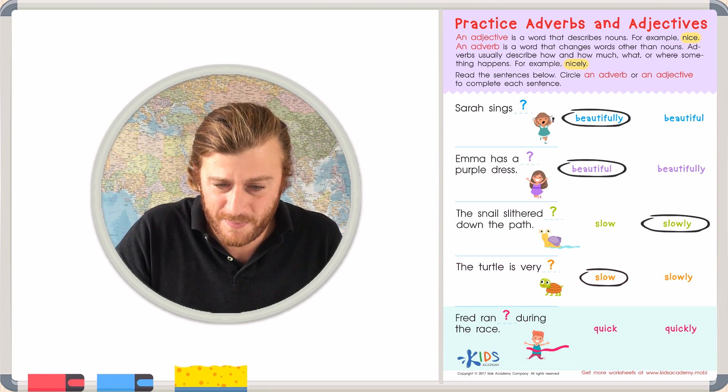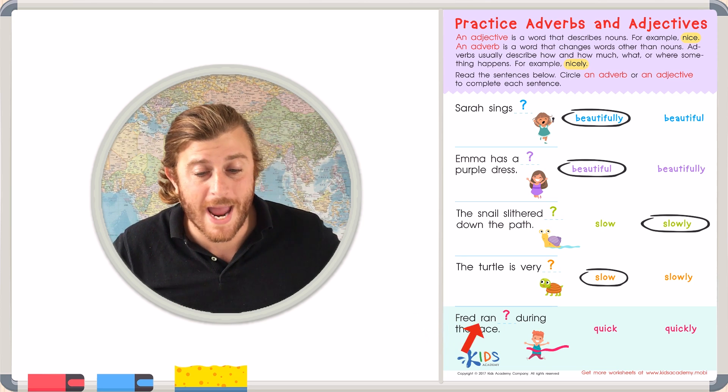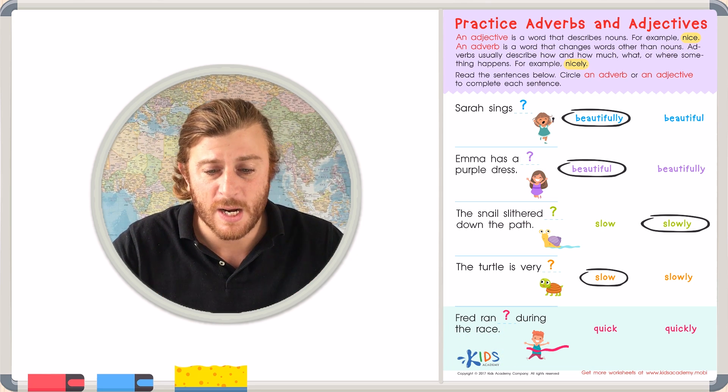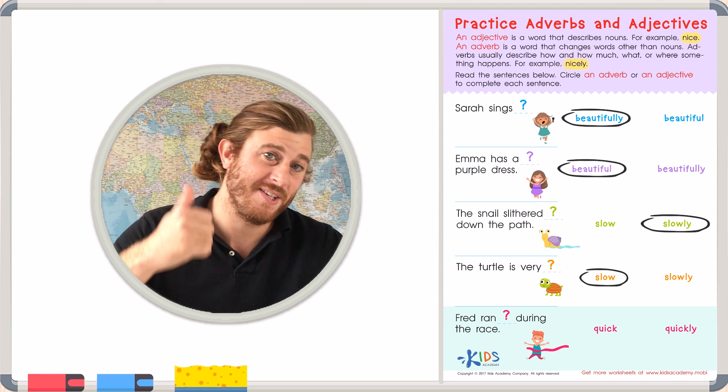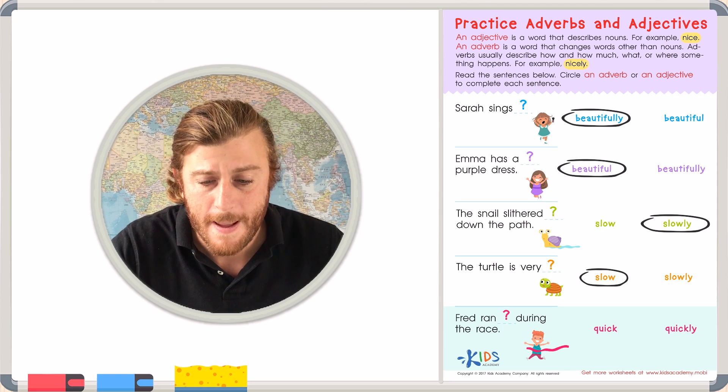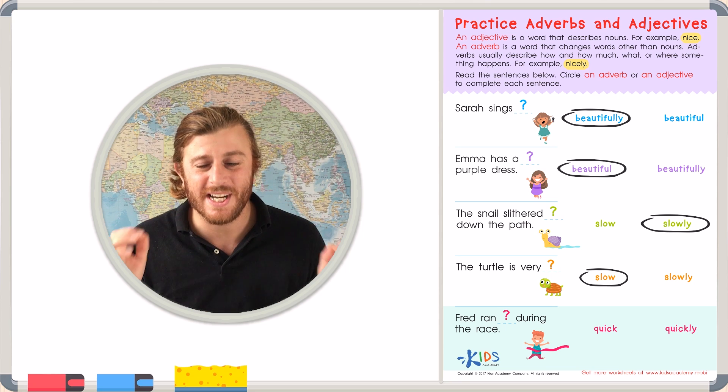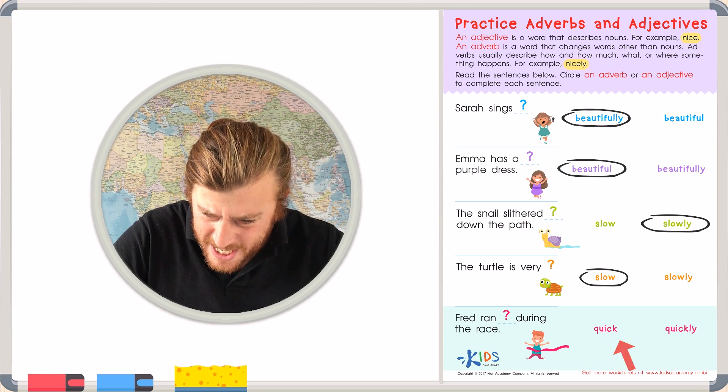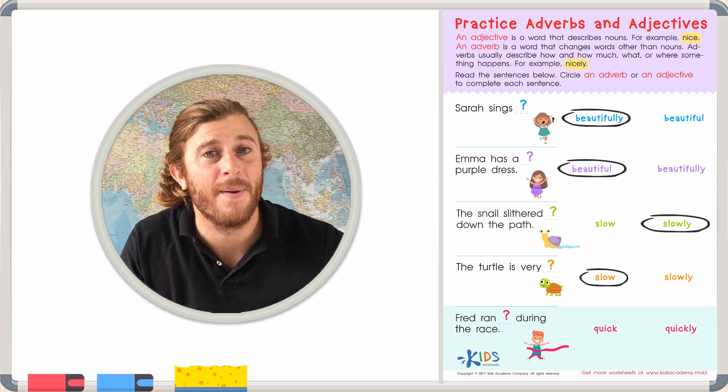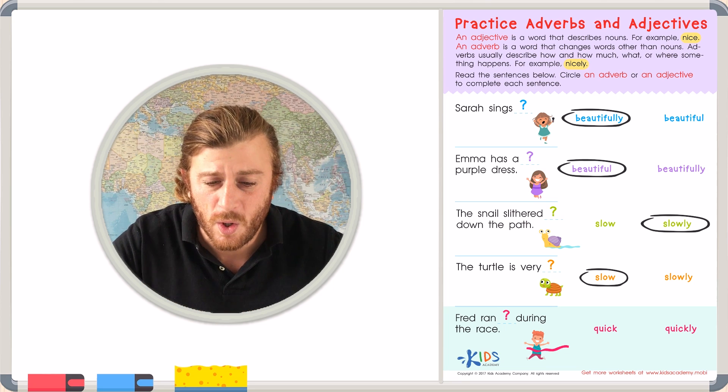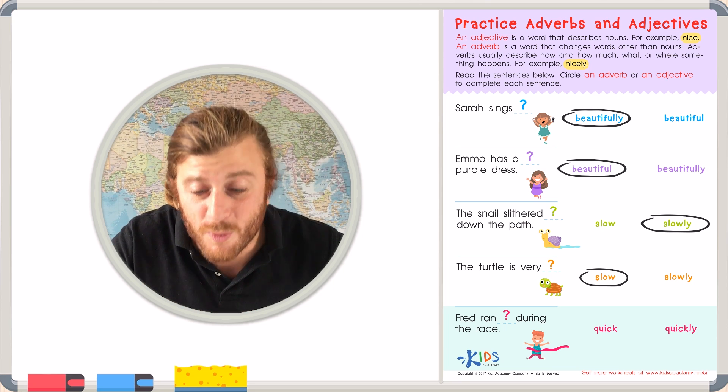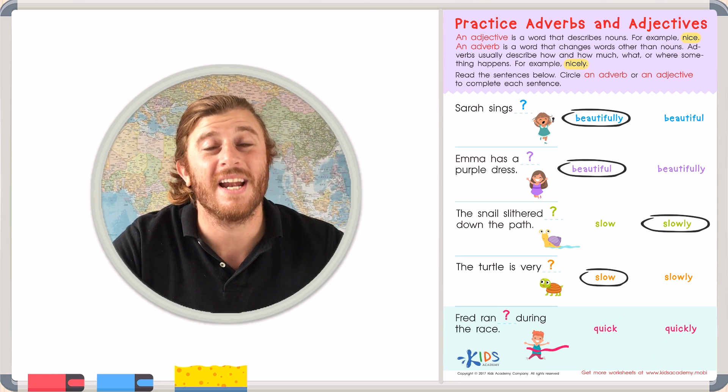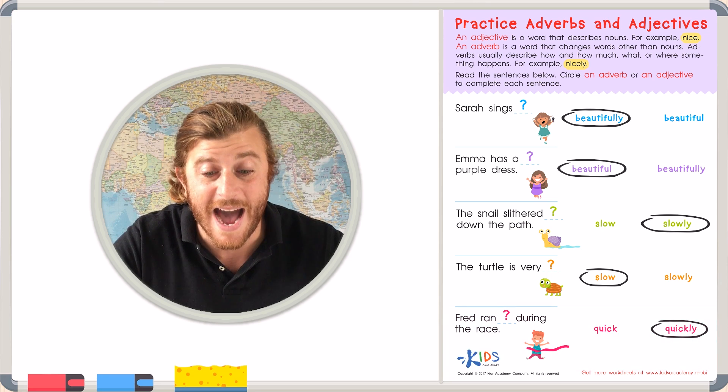Our last example is the little boy named Fred. Fred ran blank during the race. How did Fred run? Now, if we were describing Fred, we could say Fred is nice. A nice adjective. But we're looking for an adverb because we want to know how did he run the race. Describe the verb for me. Fred ran quick during the race? Now, that doesn't sound too bad. But I know we're not describing the noun. We're describing the verb. How did he run? He ran. He ran quickly during the race. We need an adverb quickly to describe how Fred ran.